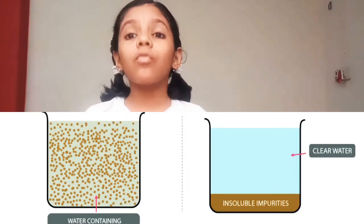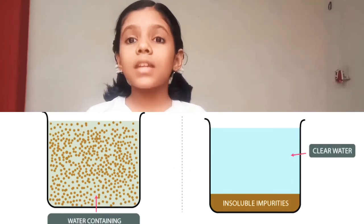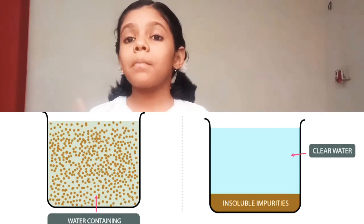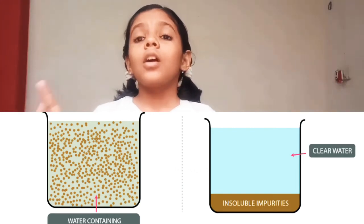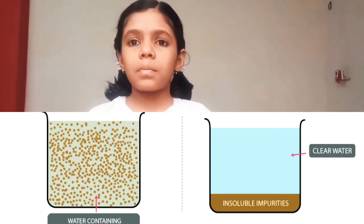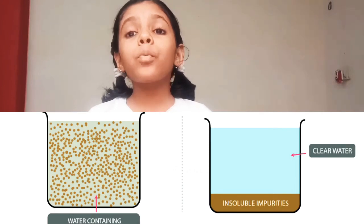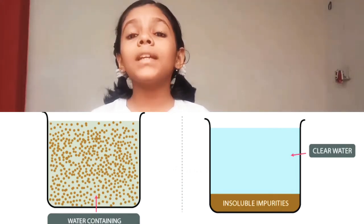So how can we purify it? What are the methods to purify water? The first method to purify water is sedimentation. Take impure water in a glass and put it undisturbed for some time, as shown in the picture. This process is called sedimentation.